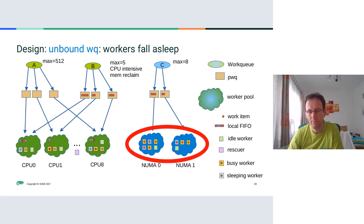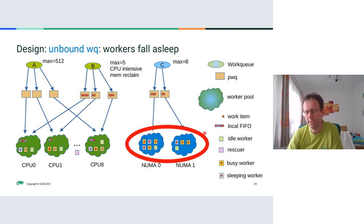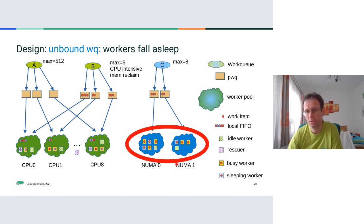For unbound workqueues when a worker goes to sleep, the behavior is simpler because the local queues of the worker pools are basically always empty. So if any worker goes to sleep, it just sleeps and nothing significant happens.